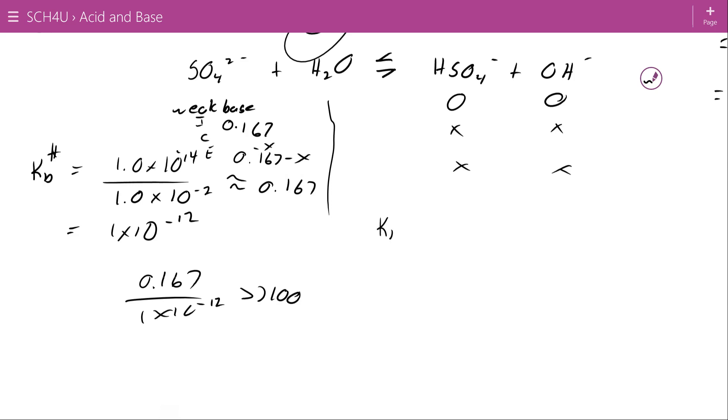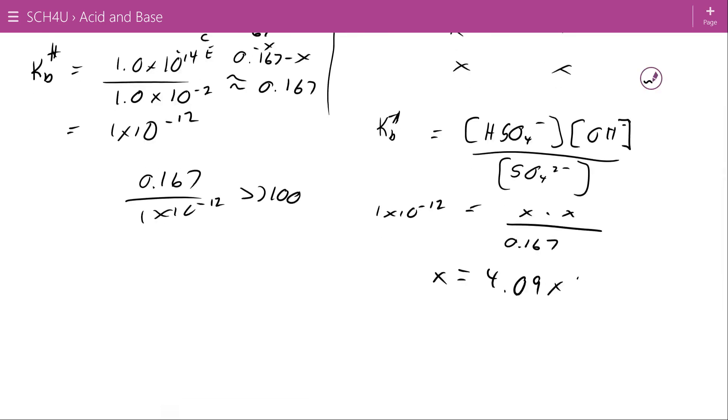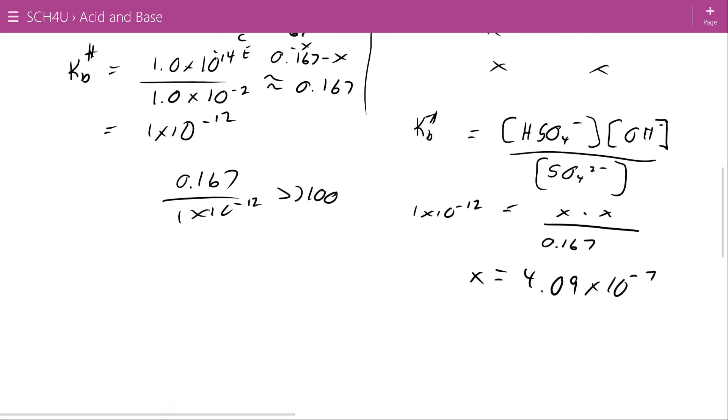And that means if I write my Kb expression, the concentration of bisulfate, concentration of hydroxide, over the concentration of sulfate, ignoring water, it's constant. Then I've got 1 times 10 to the negative 12 equals x times x divided by 0.167. It would have been minus x but because of the hundred rule I can ignore the small amount of change. So just solving this directly, I can see that my x value works out to 4.09 times 10 to the negative 7. So I got my x squared, I've multiplied that up and square root and that's what I got.